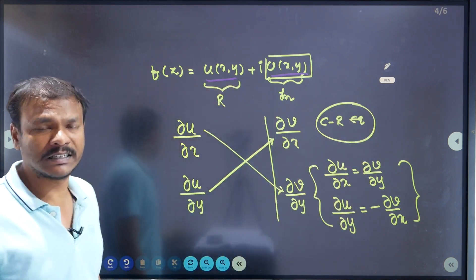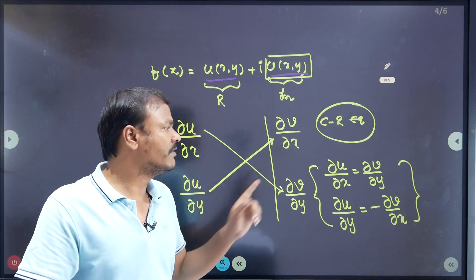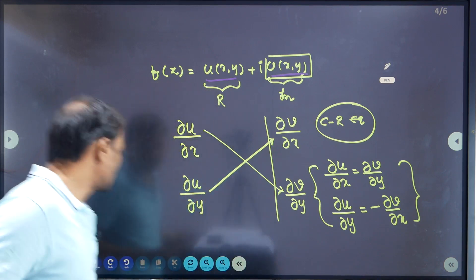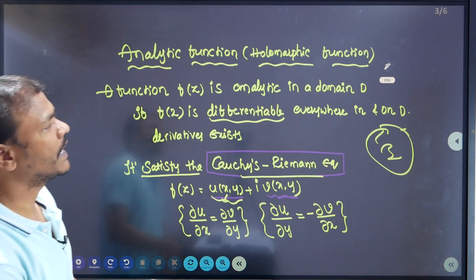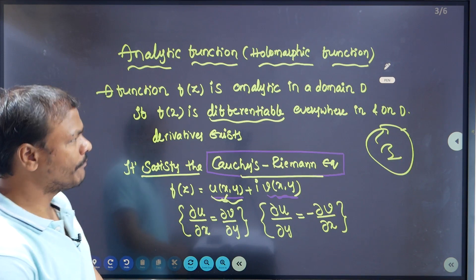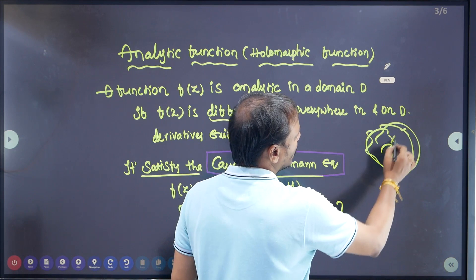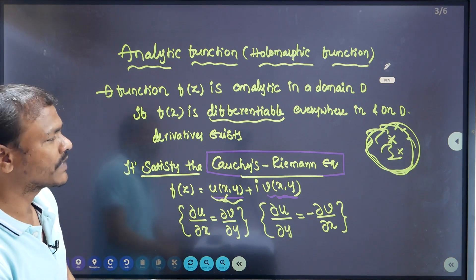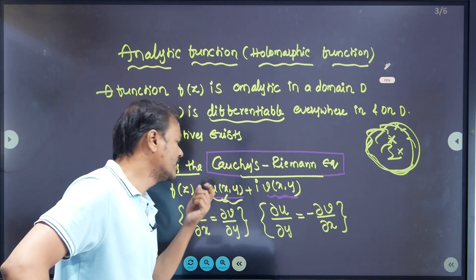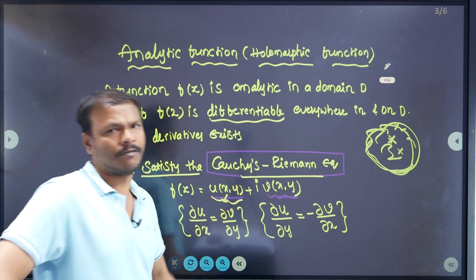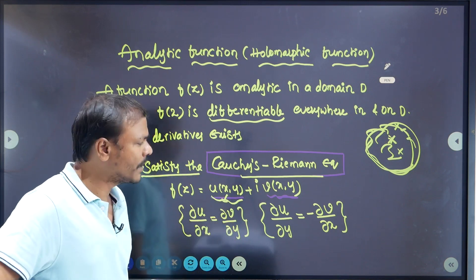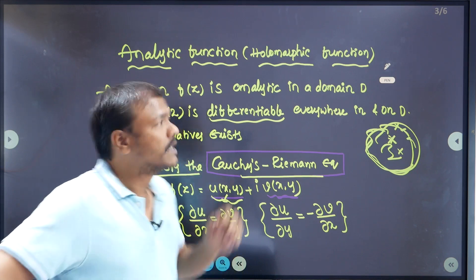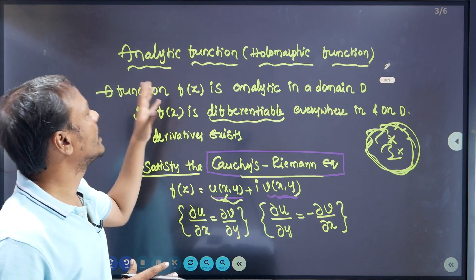So a function f of z is analytic in a domain D if f of z is differentiable everywhere in and on D and the derivatives exist — that is, it satisfies the CR equation. The CR equation is: f of z = u(x,y) + i·v(x,y), where ∂u/∂x = ∂v/∂y and ∂u/∂y = −∂v/∂x. If these are satisfied, the function is called analytic or holomorphic.